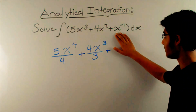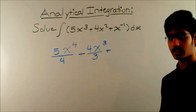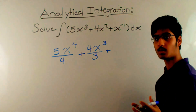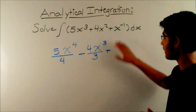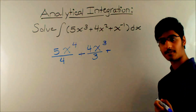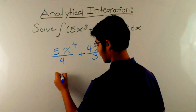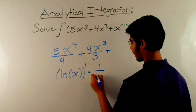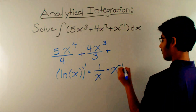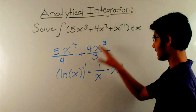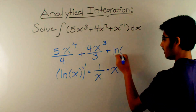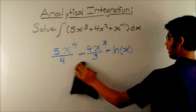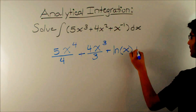Then the last term. Although this might seem like x to the negative first power requires adding 1 to the exponent to get x to the 0 power, that would just be a constant — there's a problem with that approach. Instead, we remember that the natural log of x has a derivative equal to 1 over x, and we know that 1 over x equals x to the negative first power. So this third term would have to be the natural log of x. And we must not forget to add plus C at the end.